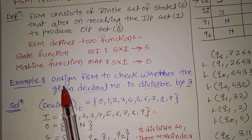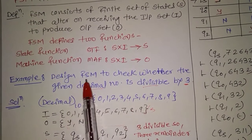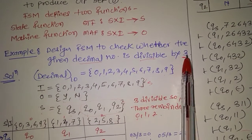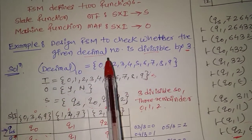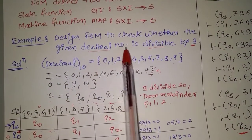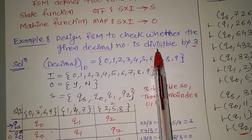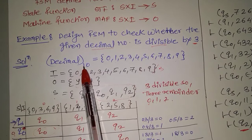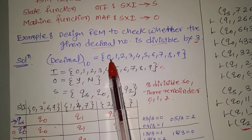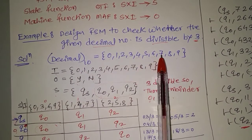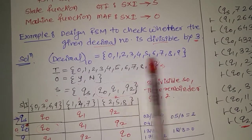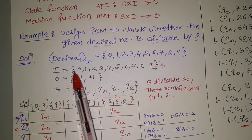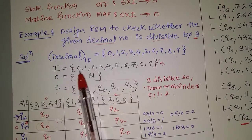Now let's start an example: design an FSM to check whether the given decimal number is divisible by 3. In this example there are two given things — first, a decimal number, and second, divisible by 3. A decimal number has base 10, meaning there are 10 digits: 0, 1, 2, 3, 4, 5, 6, 7, 8, 9. So the input set I is represented as the 10 numbers 0 to 9.